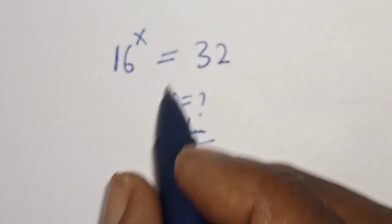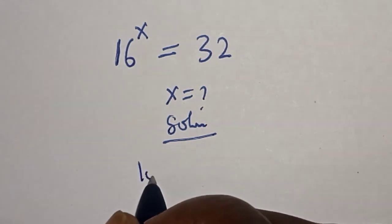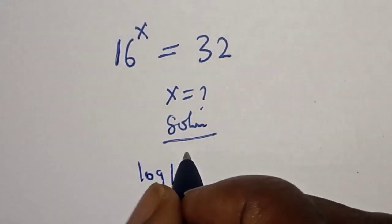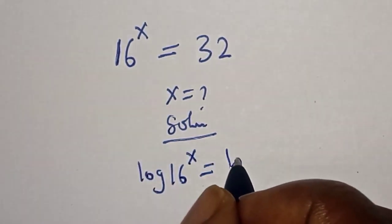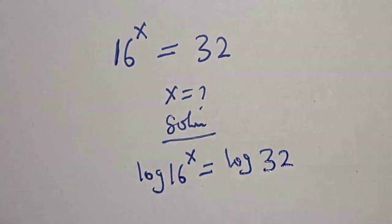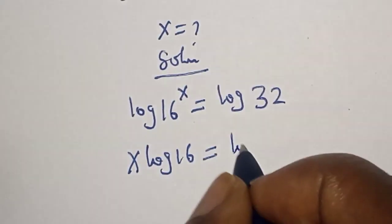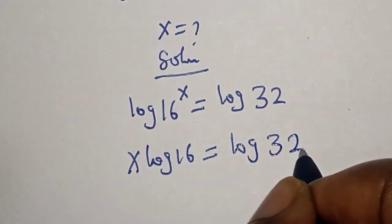Let's take the log of both sides. That is log 16 raised to power s is equal to log 32. s log 16 is equal to log 32.